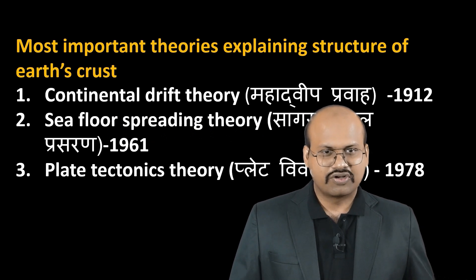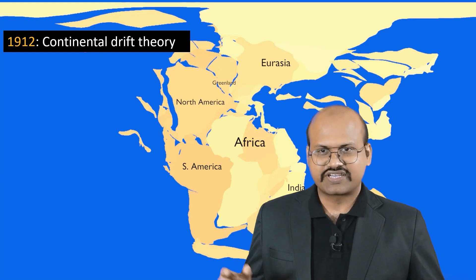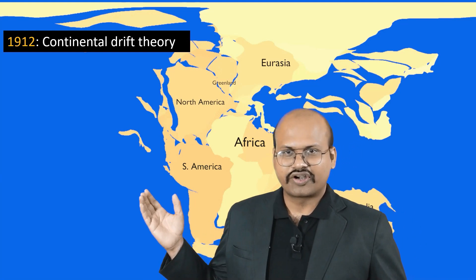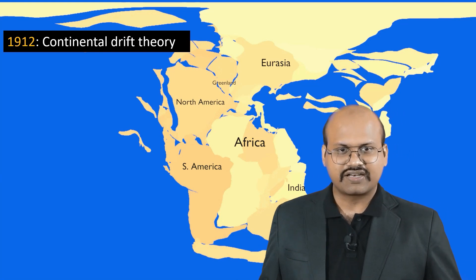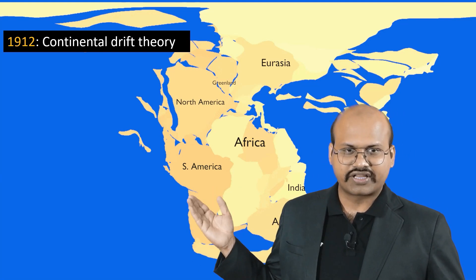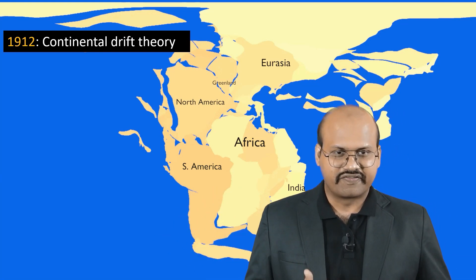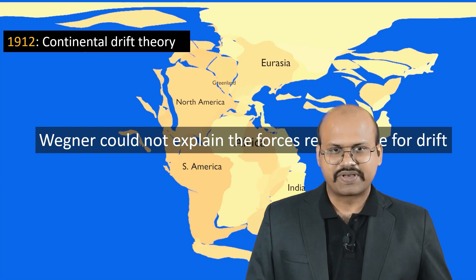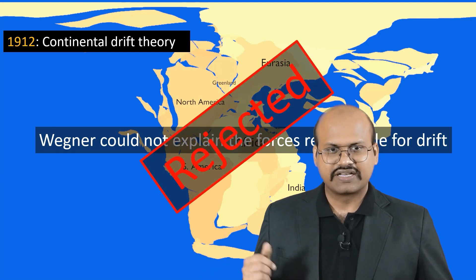Let's have a quick recap of what we discussed in our last videos. We started with continental drift theory, in which Wagner said that the continents are moving over the sea floor. However, he failed to give a mechanism for this movement, which is why his theory got rejected.